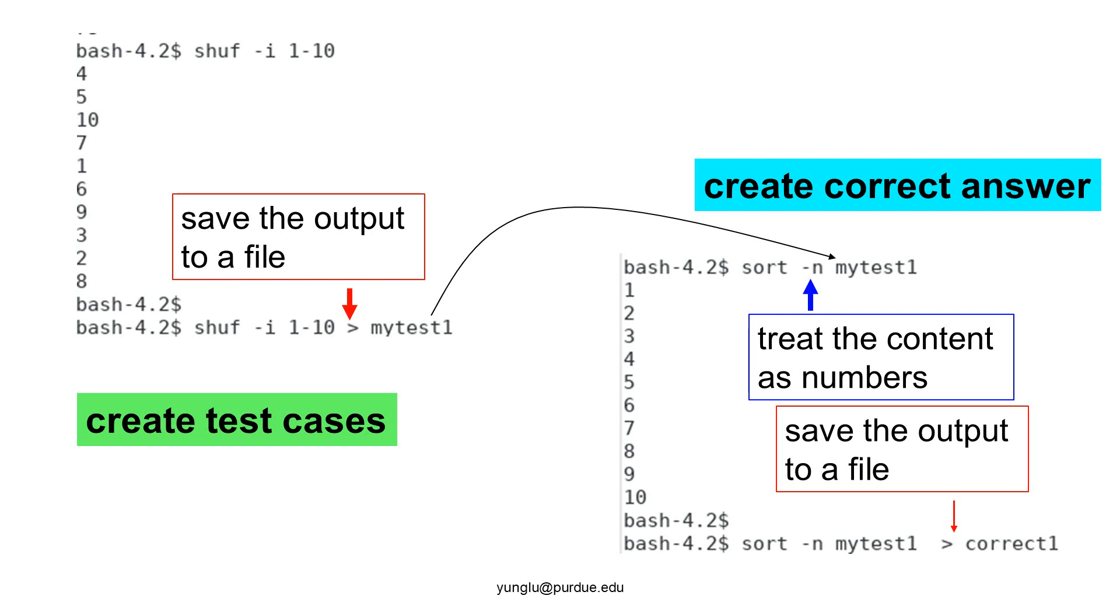With -n, 10 is treated as 10 and it is greater than 9. Without -n, 10 is treated as two letters and 1 is smaller than 9. It is also possible to save the output of sort to a file using redirection.